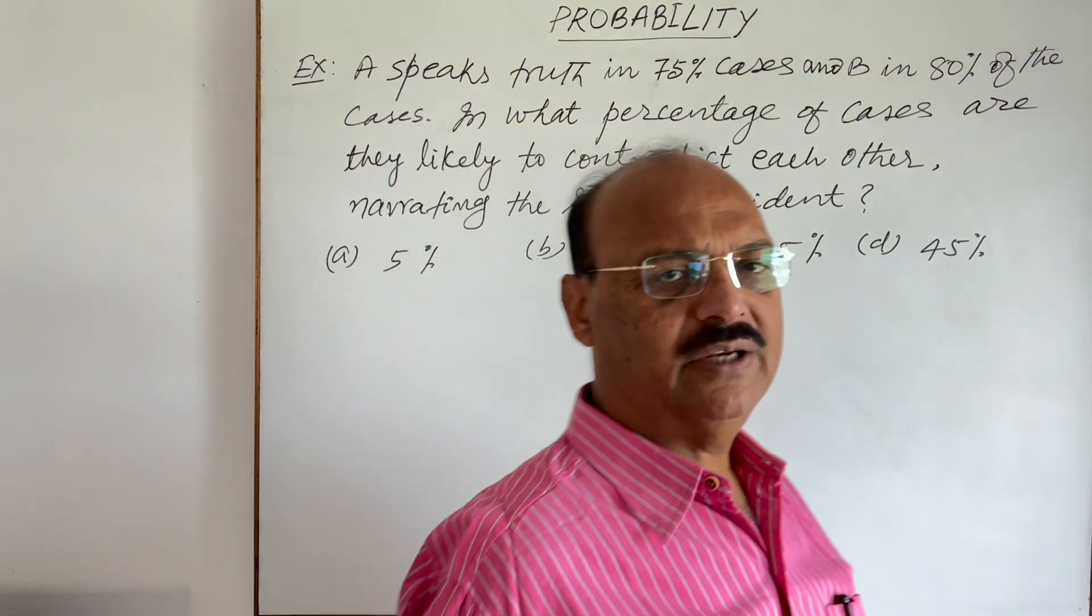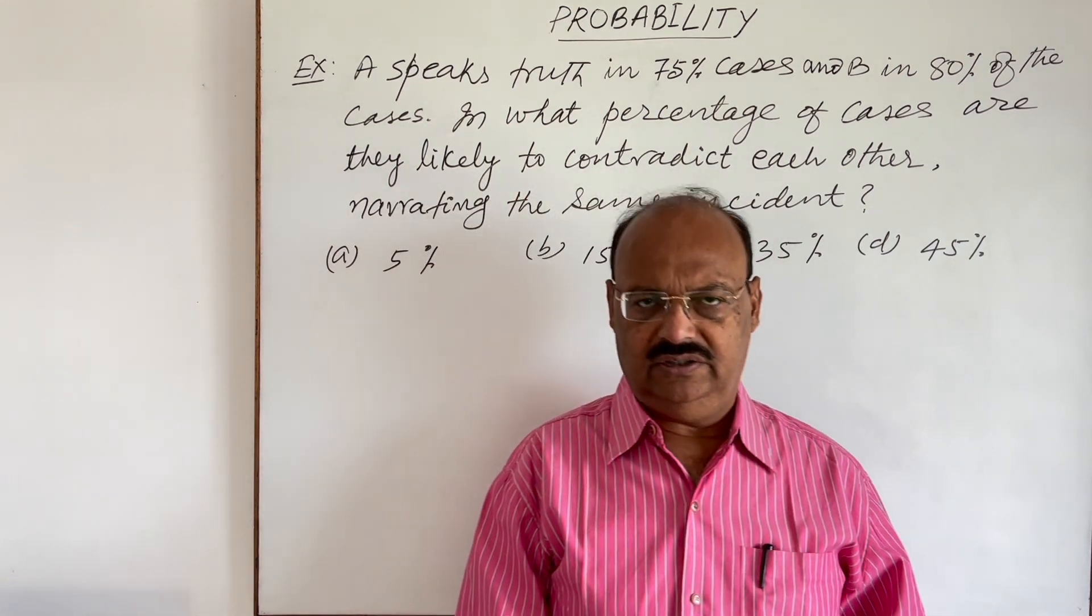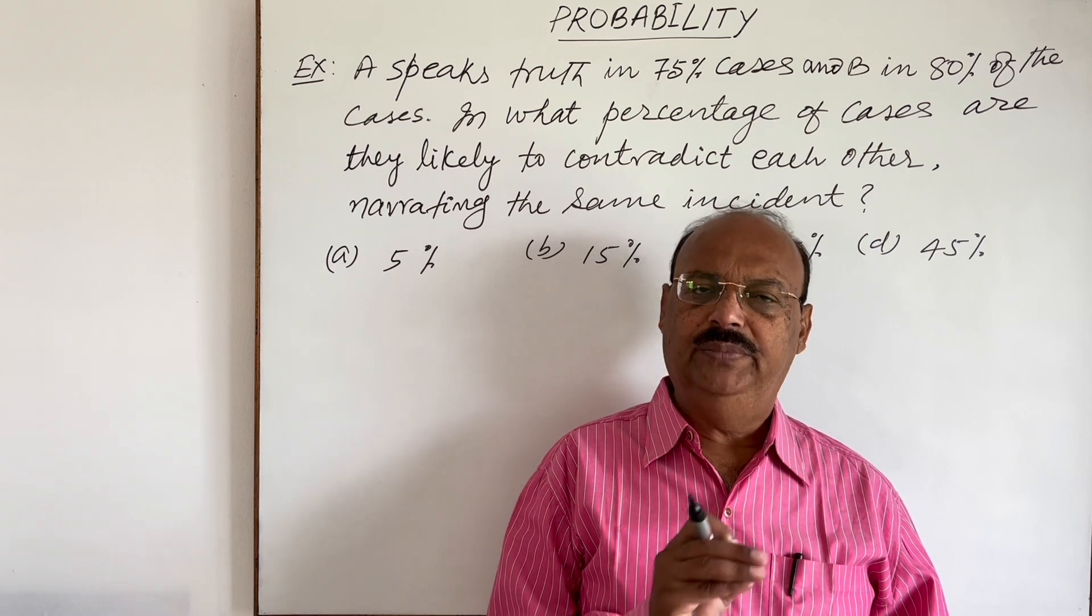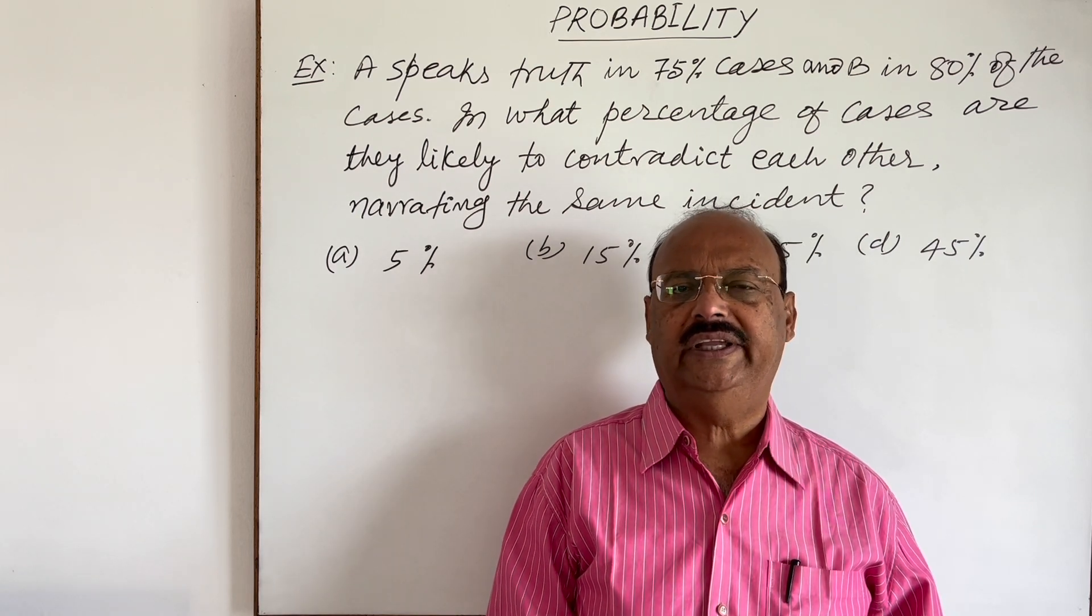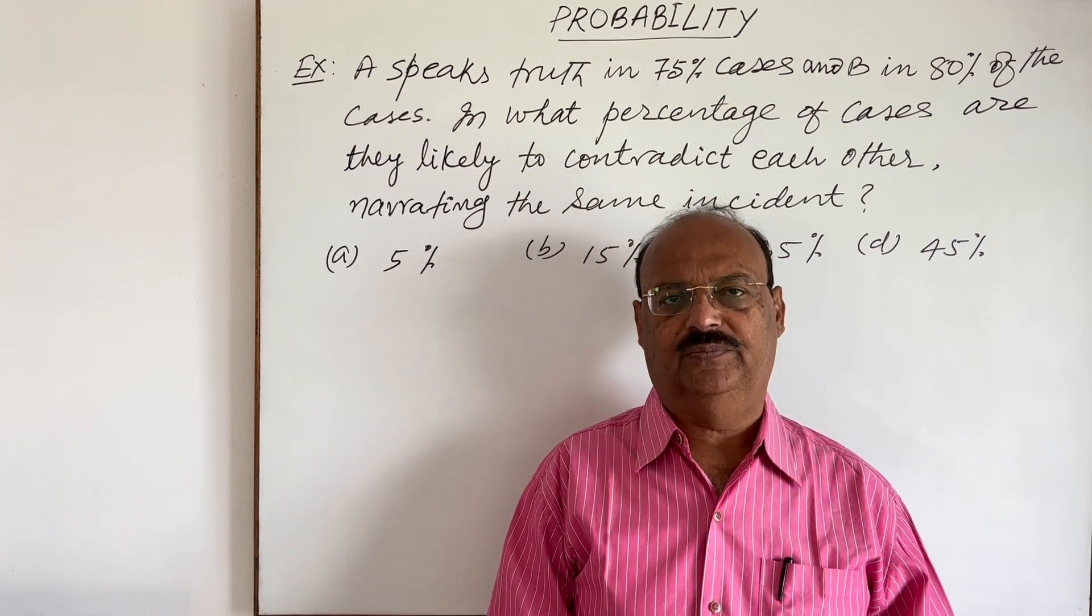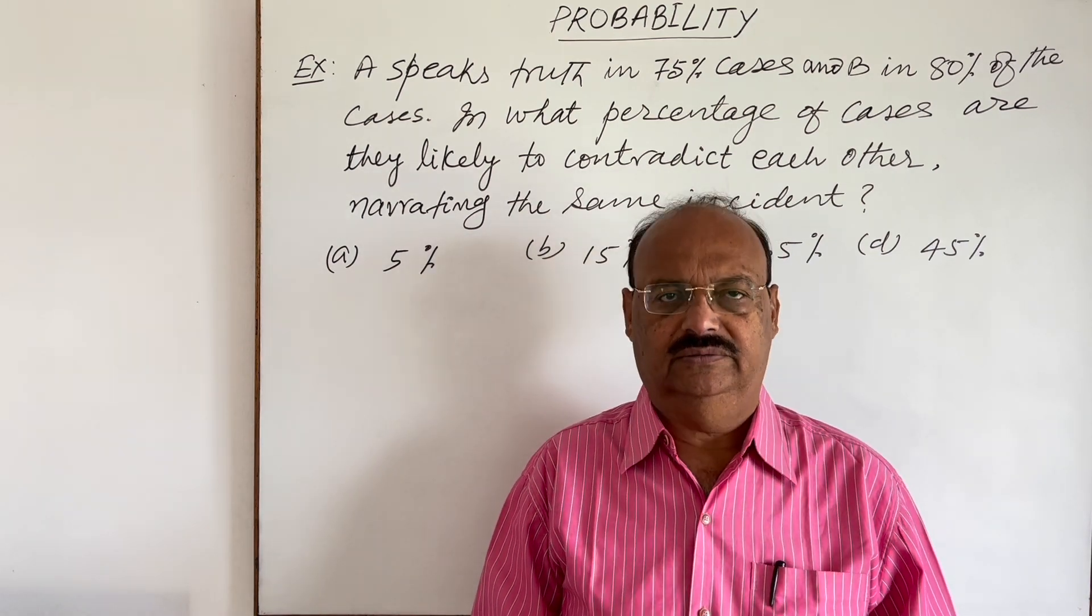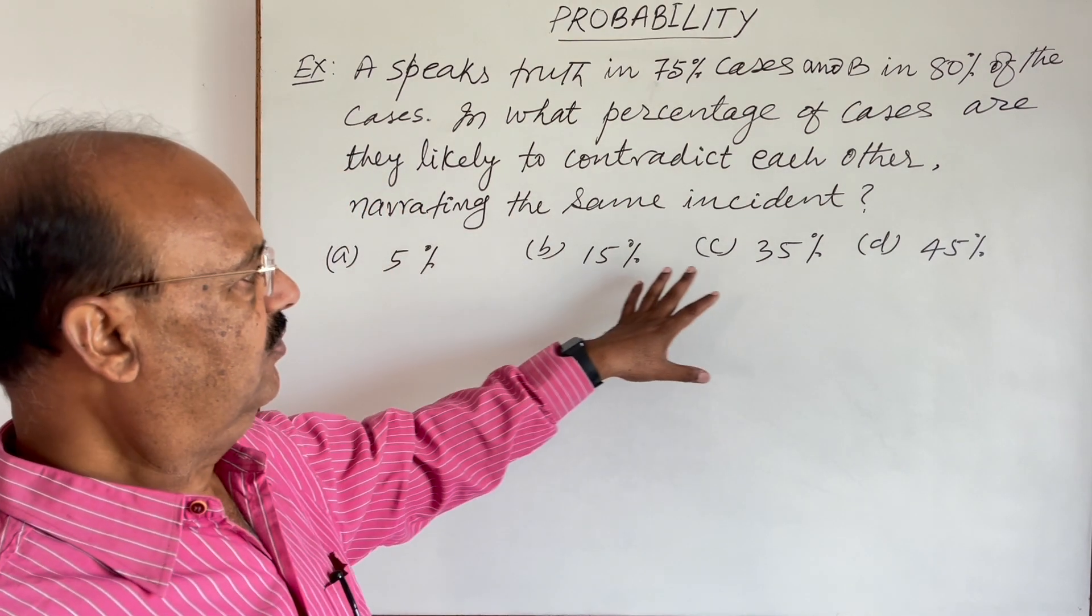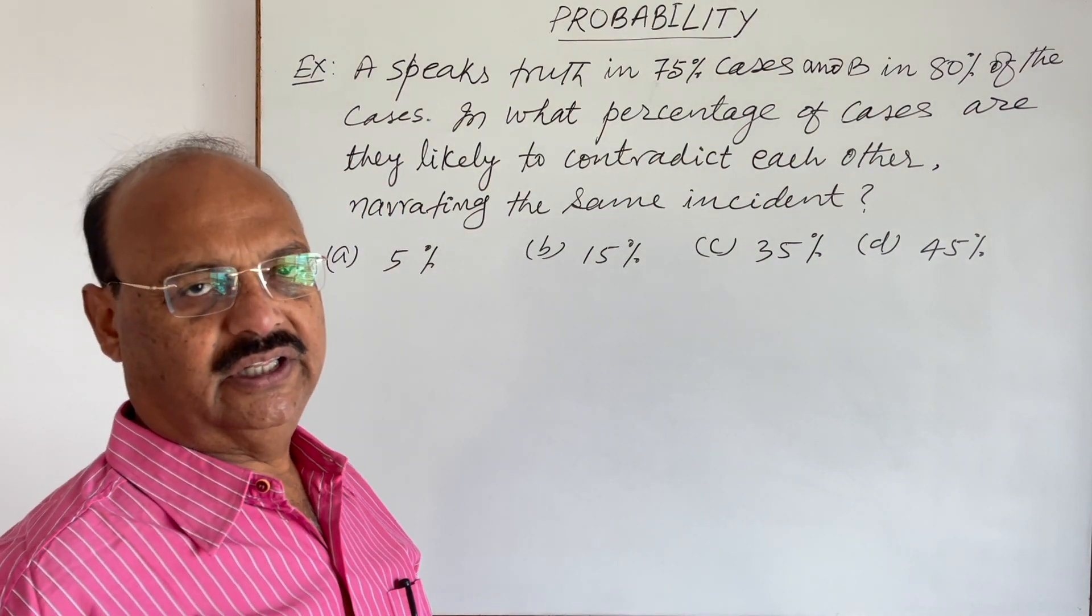Contradict each other means if A is telling truth, B is telling lie. If B is telling the truth, A is telling lie. So that is called contradiction in the same incident. Four options are already given. We have to select the correct one.